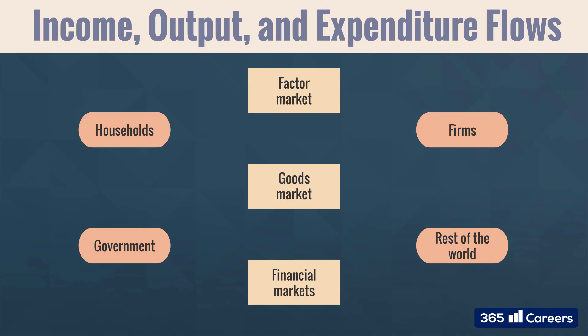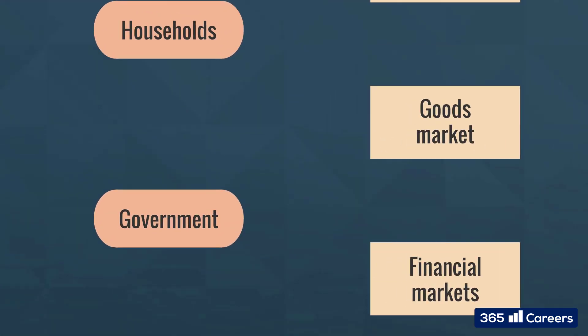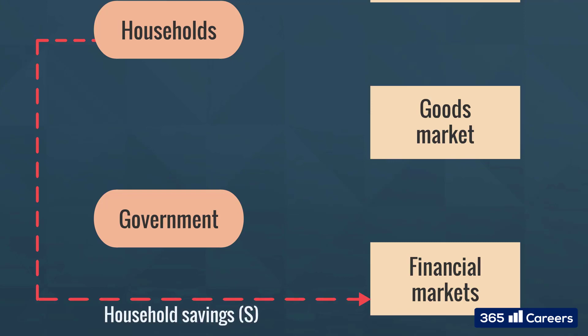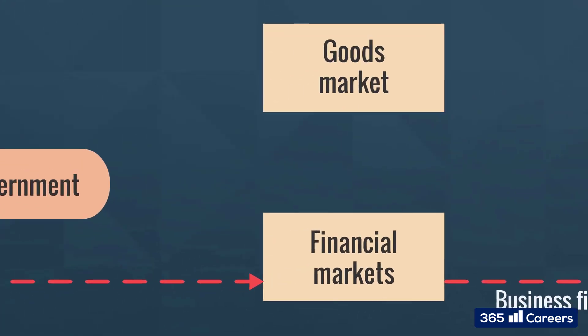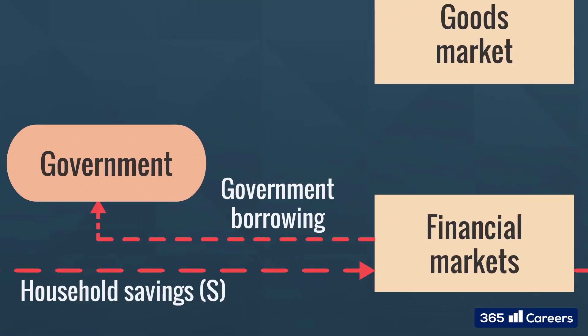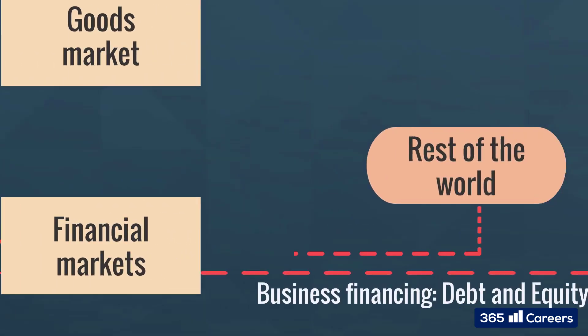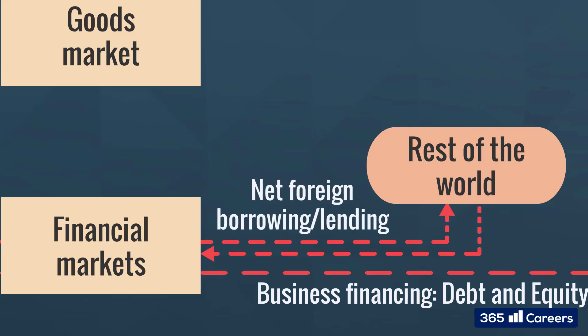The financial markets are where borrowing and lending of funds between all participants happens. When households save money, they use deposits or other saving instruments offered by the banking system. Funds flow into the financial markets where businesses raise debt or equity capital. Governments usually borrow from the financial markets, for example through repurchase agreements. For each country, we are able to calculate a net foreign borrowing and lending indicator.